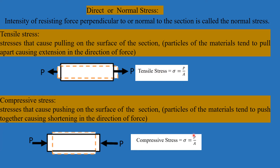The formula is the same for both tensile and compressive stresses because, as per the definition of stress, it is resisting force per unit area. The direction is different, but the resisting force always acts opposite to the applied load, so the formula for both tensile and compressive stress becomes the same. Now let us consider the next type of stress, which is shear stress.